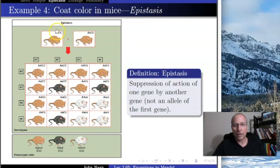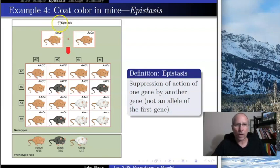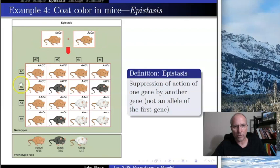What kind of gametes can this individual make? Following the same Mendelian rules, two alleles are given to offspring — one A and one C. So the four possible gametes are: big A big C, big A little c, little a big C, and little a little c. The female produces these four eggs. The male has exactly the same genotype, so he makes sperm with the exact same genotypes. Meiosis produces these gametes.